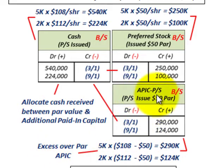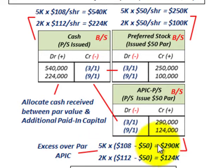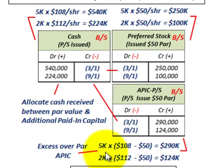Any excess over par goes to the additional paid-in capital account for preferred stock. On March 1st, we had five thousand shares times the difference between the hundred and eight dollar issue price and the fifty dollar par value, giving us two hundred and ninety thousand dollars credited to additional paid-in capital.